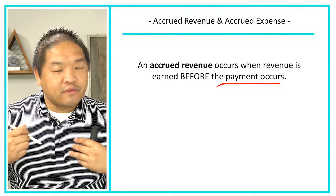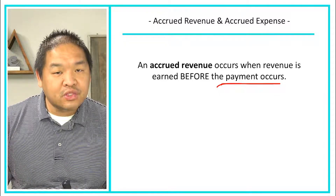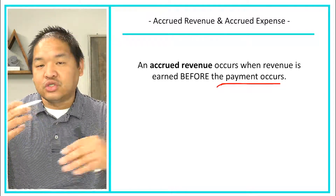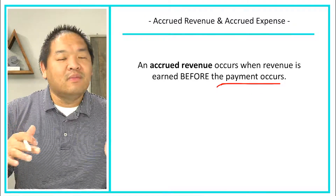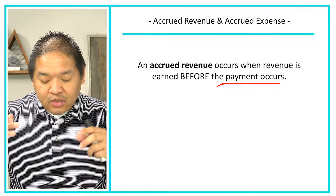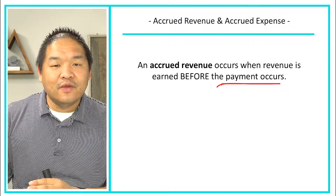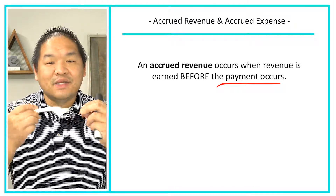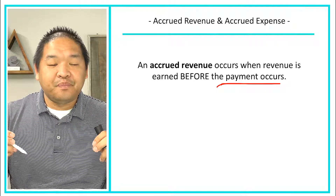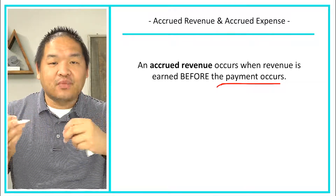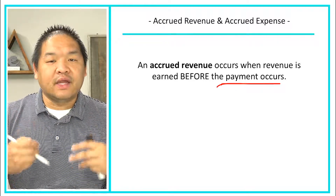Accrued revenue occurs when the revenue is earned before the payment occurs. For example, pretend you're a company providing lawn care service and you bill the client once a month at the end of the month for all services rendered. You do the service over the month and won't get paid until maybe the middle of next month. This happens a lot because business-to-business transactions are typically done on account.